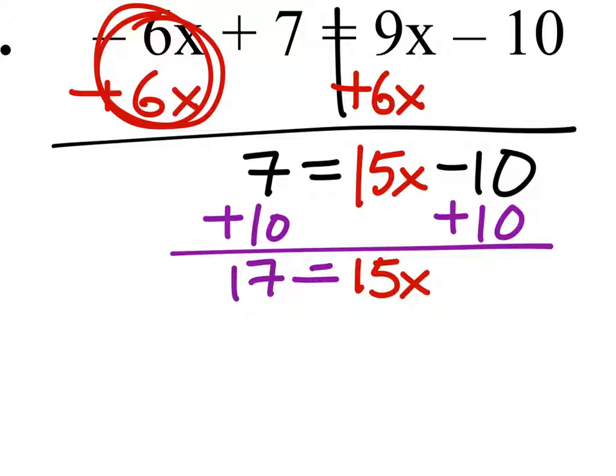Finally, to solve for x, we'll divide both sides by 15, giving us a 1 as the coefficient of x. And we get x equals 17 fifteenths.